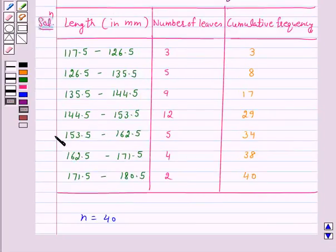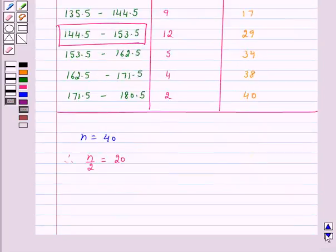From this table, we see that 144.5 to 153.5 is the class whose cumulative frequency, 29, is greater than and nearest to n by 2, that is 20. So, our median class is 144.5 to 153.5.